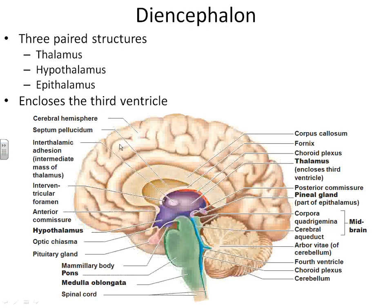This is a mid-sagittal cut of the human brain, allowing us to better see the diencephalon. The diencephalon is separated into the thalamus, shown here. To give a little more orientation, this is the corpus callosum — one of the areas with commissural tracts connecting the two hemispheres of the cerebrum. Underneath the corpus callosum, this open area is where we have the lateral ventricles. Down here, the area represented by this purple circle is the thalamus. The darker purple underneath is the hypothalamus.